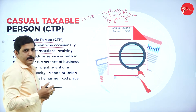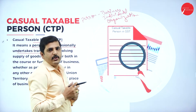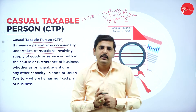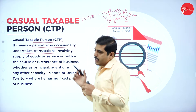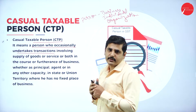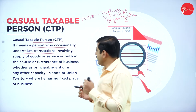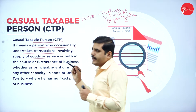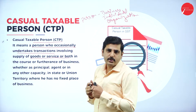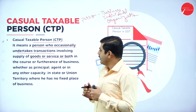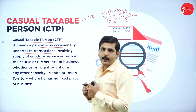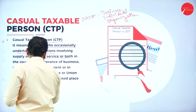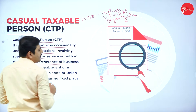A business which is not doing regular activity also comes under casual taxable person. Whether it is providing service or goods, anything comes under casual taxable person. Next, 'in course of furtherance of business' means in course of development or doing the business, whether as a principal, agent, or in any other capacity.